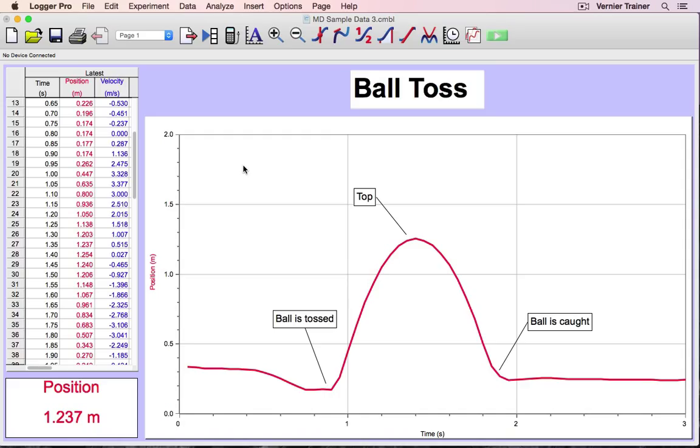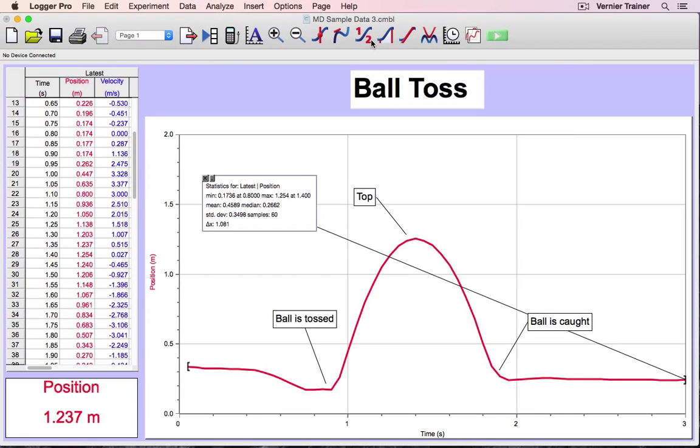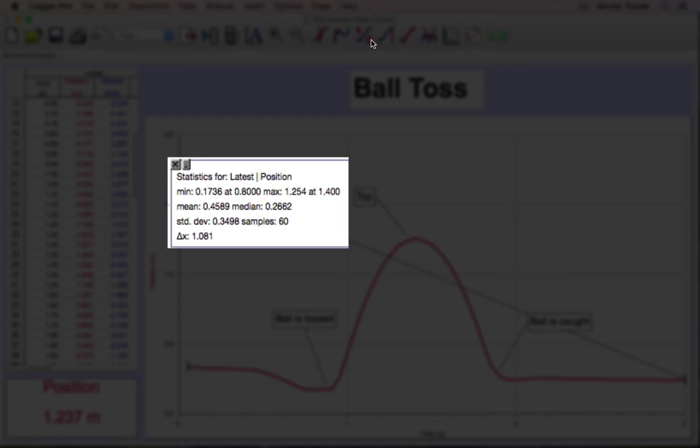A quick way to get a lot of information all at once is to use the statistics feature. Statistics, like examine and tangent, are used quite a bit and can be found in the shortcut bar. Statistics gives the maximum, minimum, mean, standard deviation, and delta, or change from the minimum to maximum, as well as the number of samples shown.